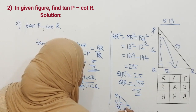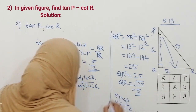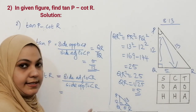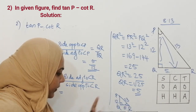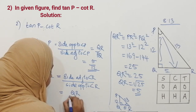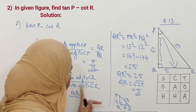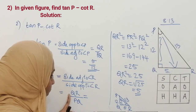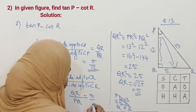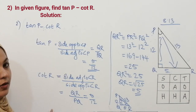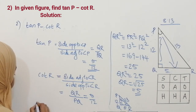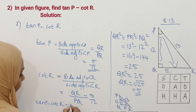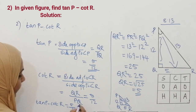In the new triangle, PQ is 12, QR is 5, and PR is 13. The reference angle is R. QR contains the 90-degree angle and the reference angle R, so QR is the adjacent side. PQ is the opposite side. QR is 5 and PQ is 12, so cot R is 5 by 12. Our question is tan P minus cot R — that is 5 by 12 minus 5 by 12, which equals 0.